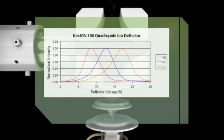The quadrupole ion deflector is the only filter of its kind that allows you to adjust your mass bandpass on the fly, automatically, to maximize sensitivity for every element in a run.